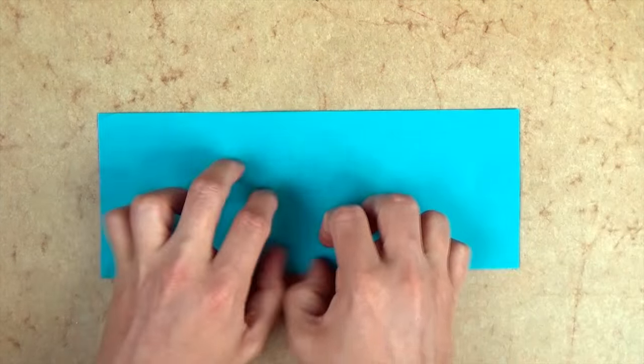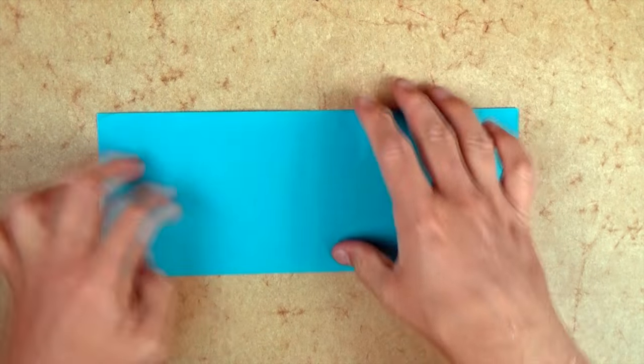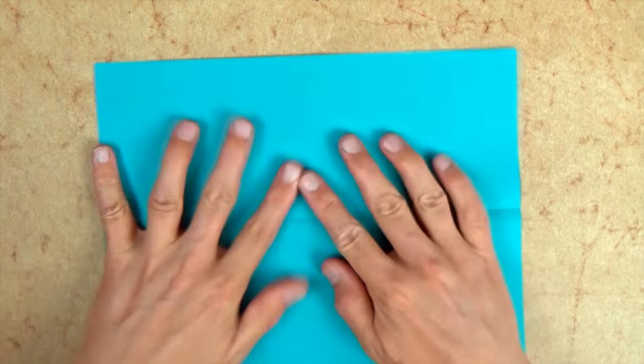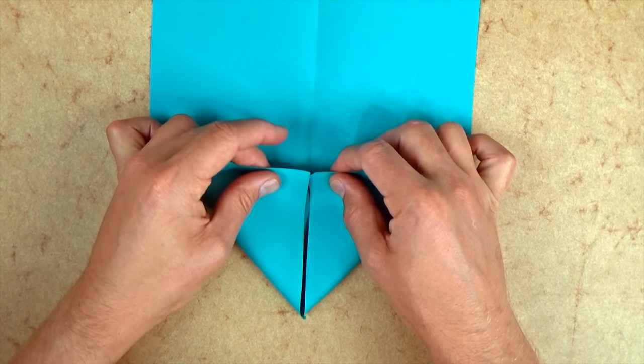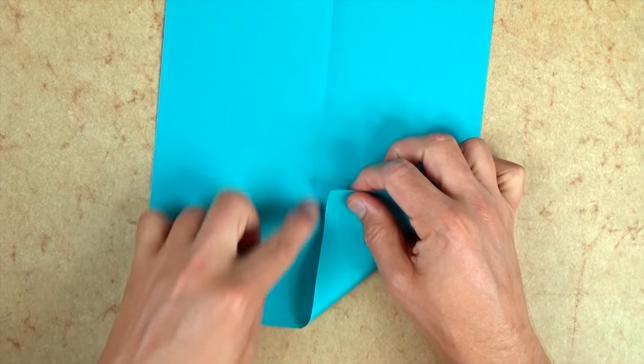So now let's unfold and let's rotate and let's do a paper airplane fold. So we're folding these corners to the crease.